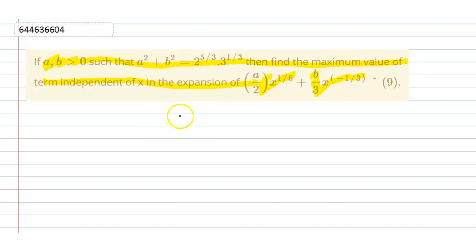So we have to find the term independent of x in the expansion of (a/2) x raised to the power 1/6 plus (b/3) into x raised to the power minus 1/3 whole raised to the power 9.